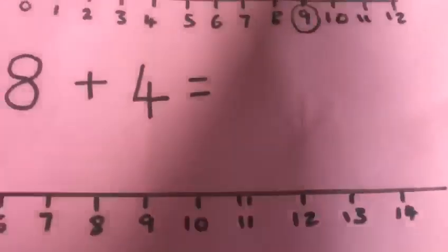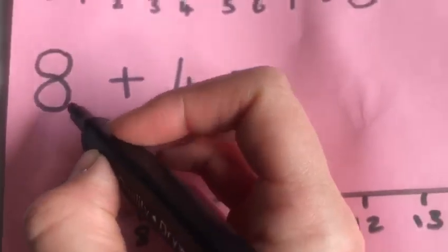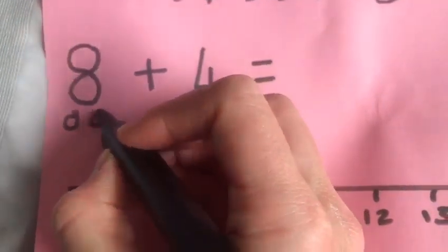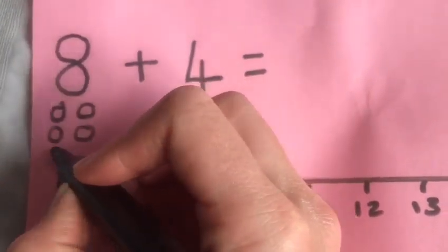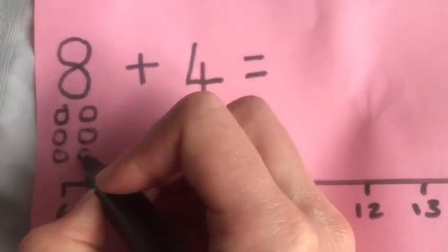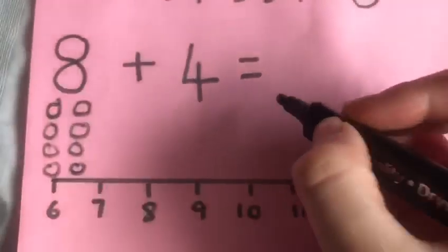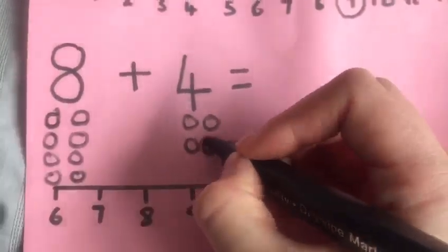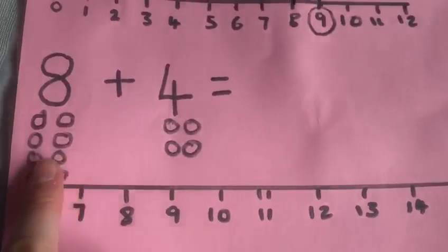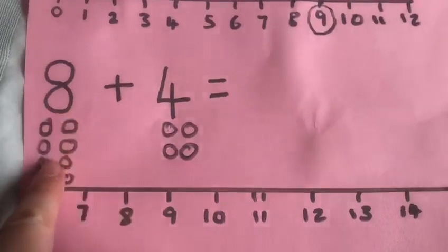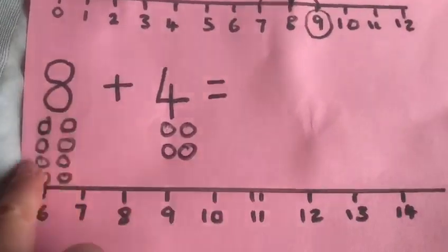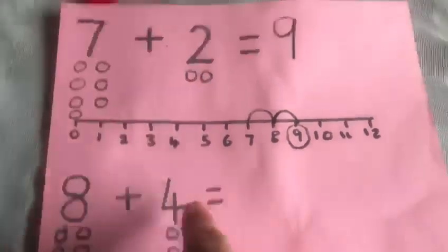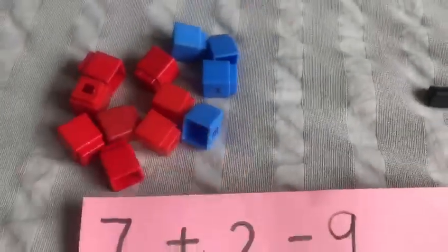So you might have chosen to do it pictorially. So you might have drawn eight here — one, two, three, four, five, six, seven, eight — and then add a four here. And you can count all of them, or you can put eight in your head because you know there's eight there — eight, nine, ten, eleven, twelve. You get the same answer — twelve.